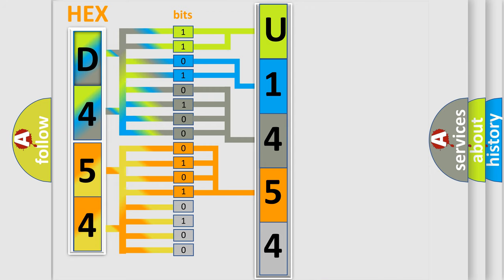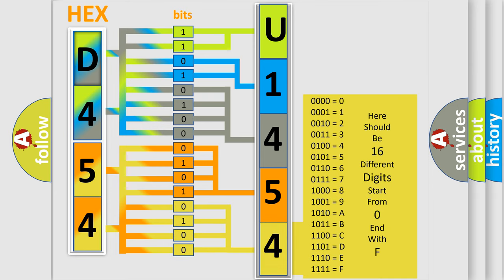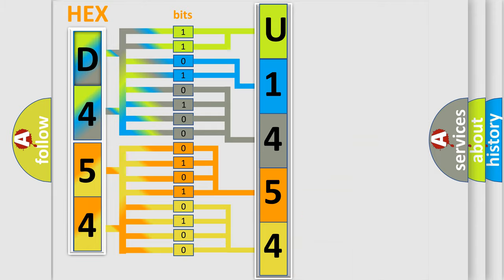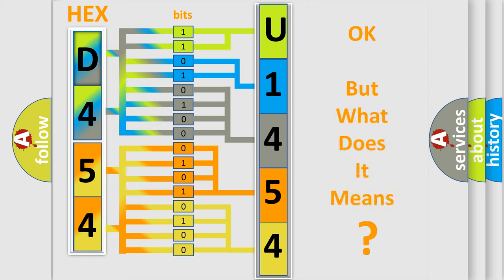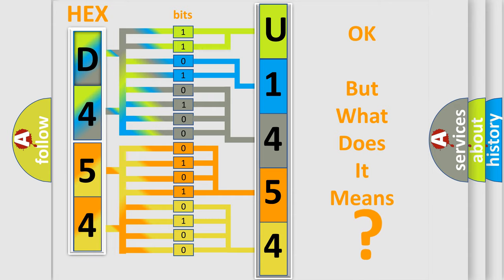A single byte conceals 256 possible combinations. We now know in what way the diagnostic tool translates the received information into a more comprehensible format. The number itself does not make sense to us if we cannot assign information about what it actually expresses. So, what does the diagnostic trouble code U1454 interpret specifically for Chrysler car manufacturers?